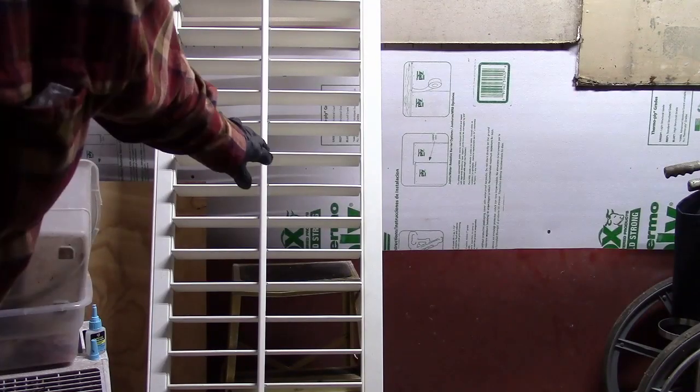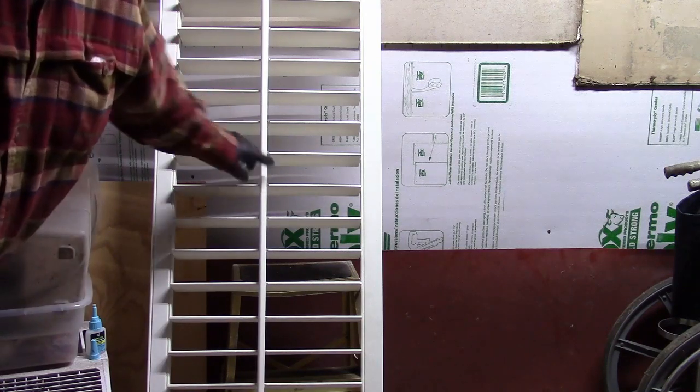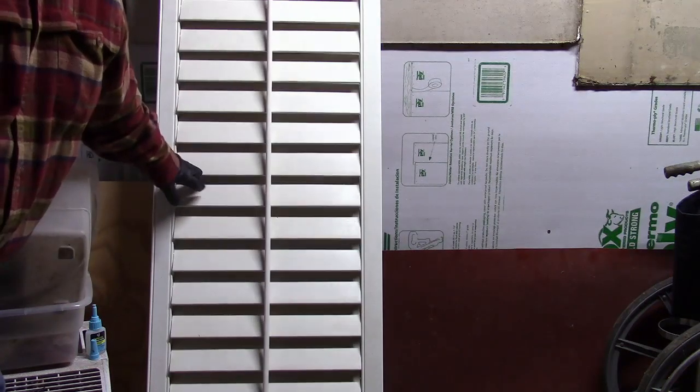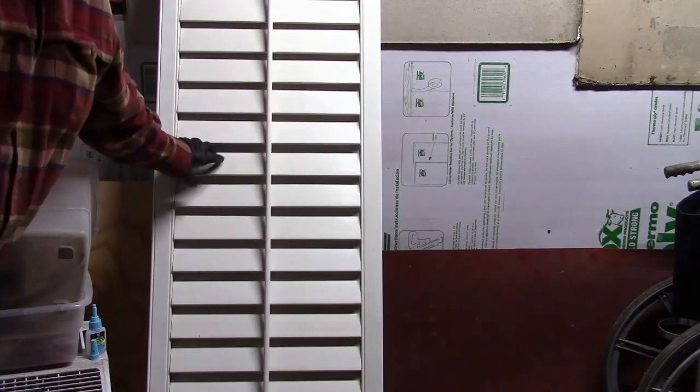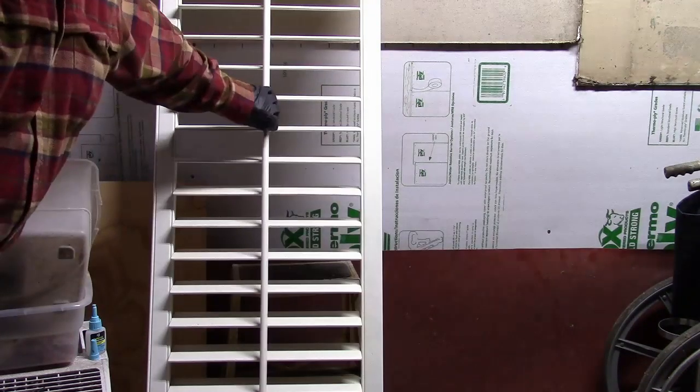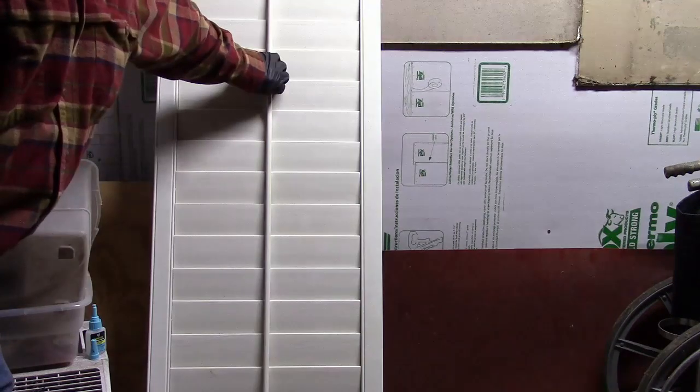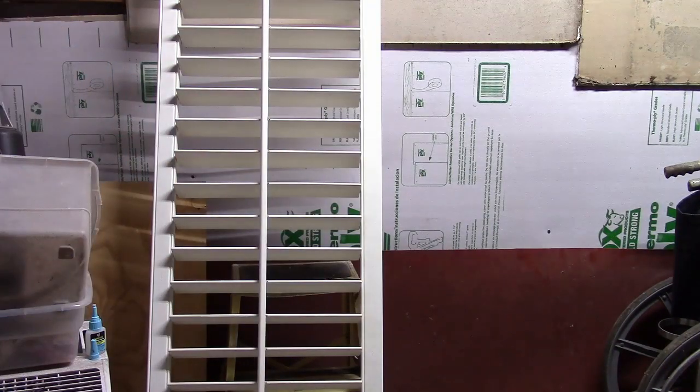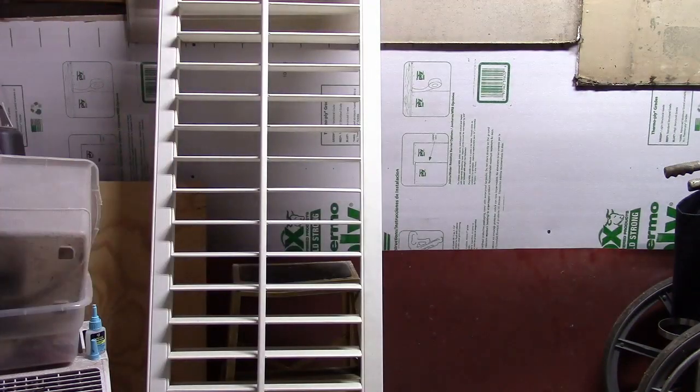A lot of times when these things pull out, it's because instead of somebody grabbing the rod, they grab a slat and push them close. That's what sometimes knocks them loose. So if you can just remember to use a rod, because if you do get too rough with them, they will pull out. That's it.